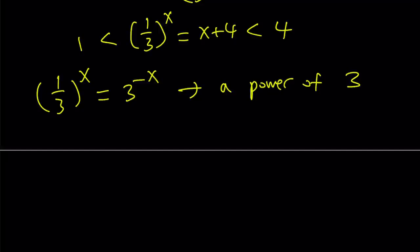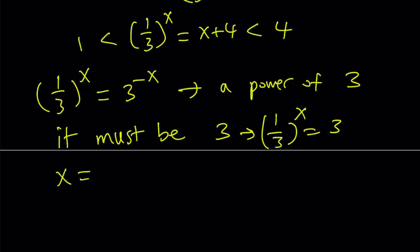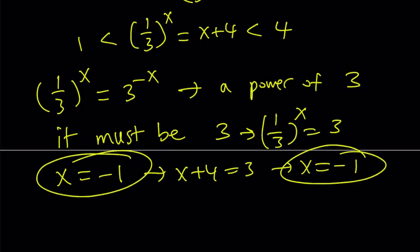The only power of 3 between 1 and 4 is 3. So the y value must be 3. This implies 1 over 3 to the power x equals 3, which means x is equal to negative 1. But if 1 over 3 to the power x is equal to 3, that means x plus 4 is equal to 3, and that means x is equal to negative 1. They both checked. So x equals negative 1 is definitely a solution.